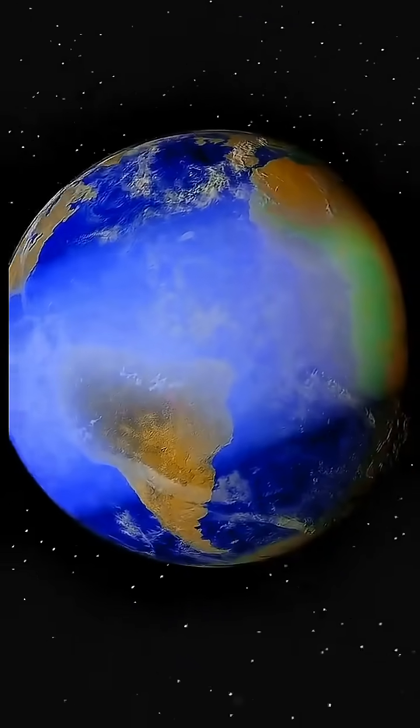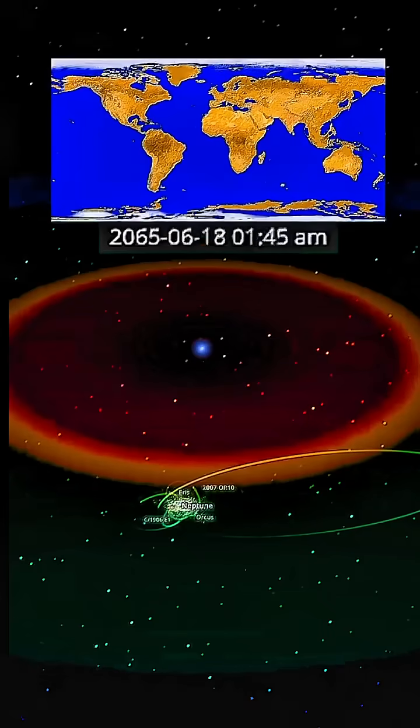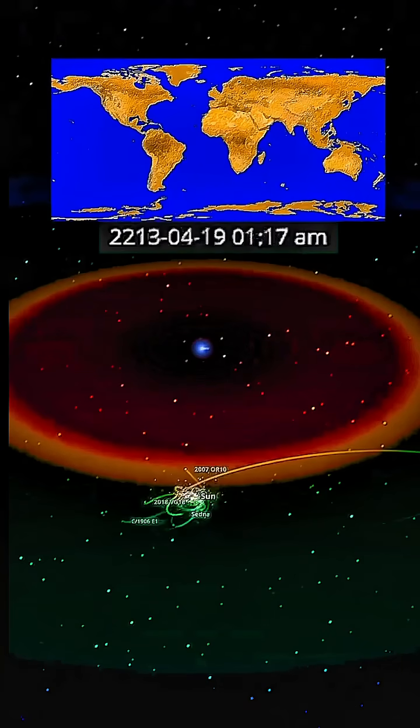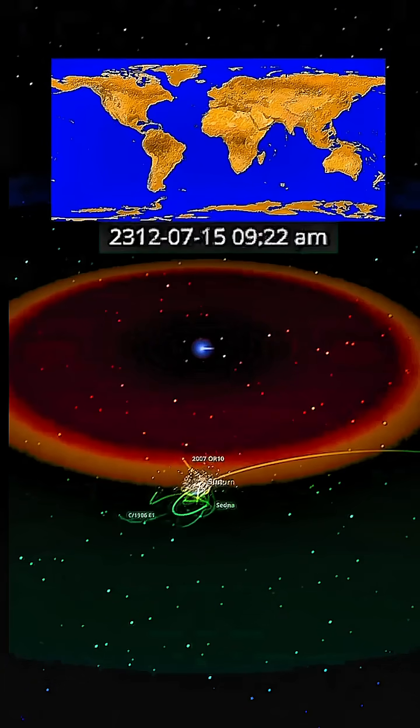Our atmosphere starts breaking down under the intense radiation. The Pistol Star's enormous mass creates an even deadlier threat. Its massive gravitational pull begins disrupting our entire solar system.